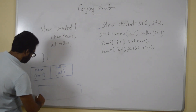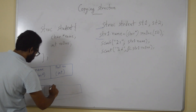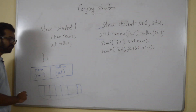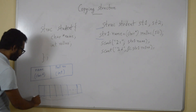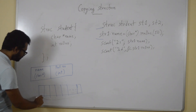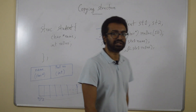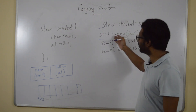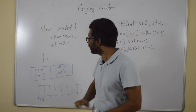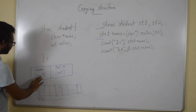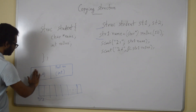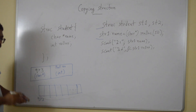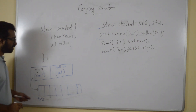The machine allocates 50 bytes and let's say the first byte is at address 973. Since we assign that address to str1.name, 973 is stored in the name field, meaning this pointer points to that memory location.